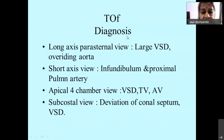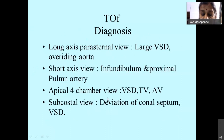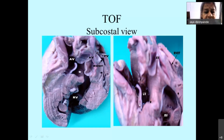Diagnosis is generally by echocardiography. The long-axis parasternal view gives an image of the large VSD and overriding aorta. The short-axis view gives the picture of the infundibulum and proximal pulmonary artery. The apical four-chamber view shows the VSD, tricuspid valve, and aortic valve. A subcostal view shows deviation of the conal septum and the VSD. This is a subcostal view of a heart cut in the proper plane, showing the narrowed right ventricular outflow with the deviated septum, aortic override, and right ventricular outflow tract.